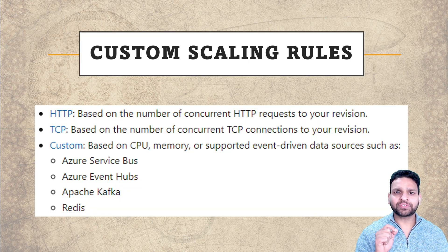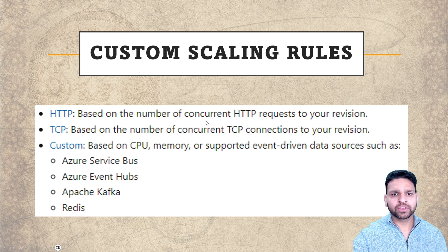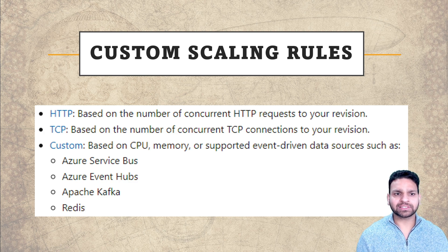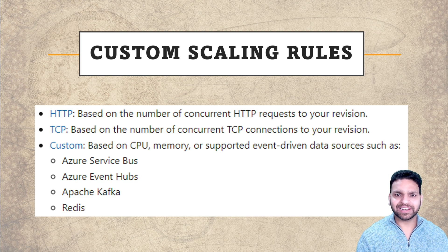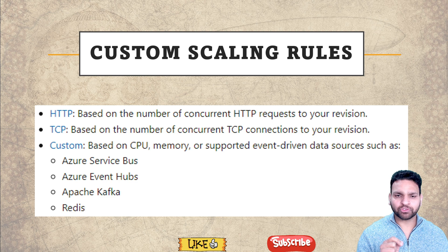Let's start with what are the different scaling options used in Azure Container Apps. You can create rules based on HTTP requests — if you have a certain number of concurrent HTTP requests, autoscaling will happen and your containers will scale up in your revision. The same works with TCP also — if there are a certain number of TCP connections above what's defined, then scaling will happen in the revision.